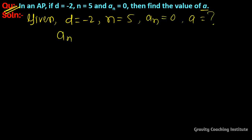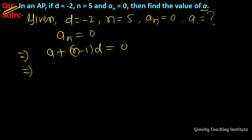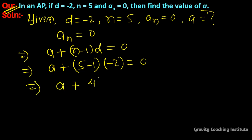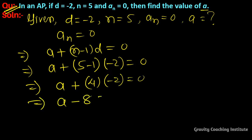We know that the nth term of an AP is aₙ = a + (n-1)d = 0. Substituting n = 5 and d = -2: a + (5-1) × (-2) = 0, which gives a + 4 × (-2) = 0, so a - 8 = 0. Therefore, a is equal to 8.